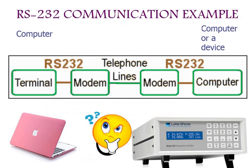A typical RS-232 communication example: you can see a terminal connected to a modem with data going through a telephone line and brought back to a computer — this is a telecommunication example, not exactly for scientific instruments. For scientific instruments it is much simpler — there is no modem required. The communication can take place in both directions, as in a laptop and a meter example shown in the picture.